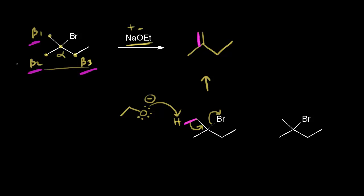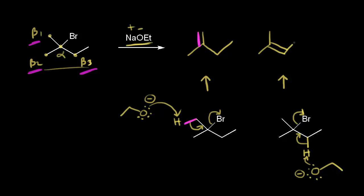Now let's take a proton from our beta three carbon. Here's the proton, and I'll draw in the ethoxide anion with its lone pairs and negative one formal charge. We take this proton, these electrons move into the double bond, and then the electrons come off onto the leaving group to form the bromide anion. That gives us the alkene formed when we take a proton from the beta three carbon — there's our double bond.